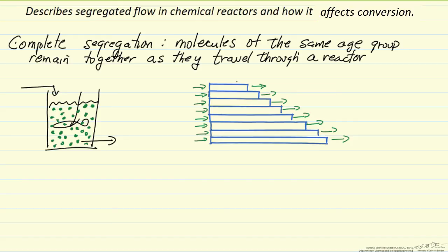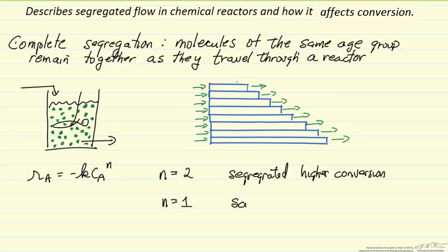And so the difference depends on what's the order of the reaction. So for example, if I have a rate of reaction for component A and n equals 2, then segregated flow will give a higher conversion in contrast to micromixing. If I have order n equals 1, now it's the same, it doesn't matter which model, we're going to get the same conversion.